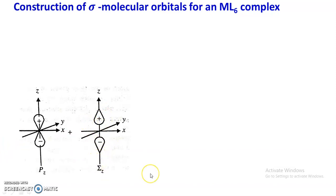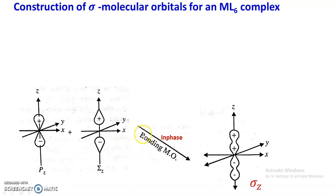When these two orbitals combine, there are two possibilities. The first is in-phase combination, where the positive lobe overlaps with the positive lobe and the negative lobe overlaps with the negative lobe. This in-phase combination results in the formation of a bonding molecular orbital. When the positive lobe overlaps with the positive lobe and the negative lobe with the negative lobe, we get this type of bonding molecular orbital, denoted as σz.